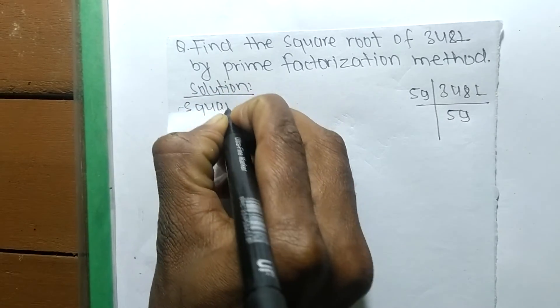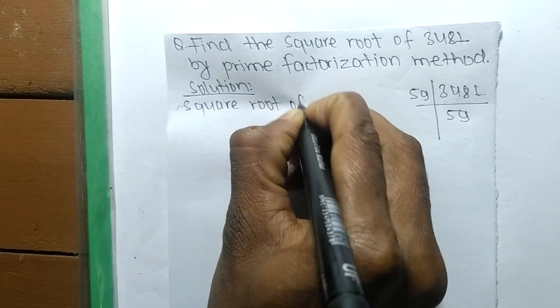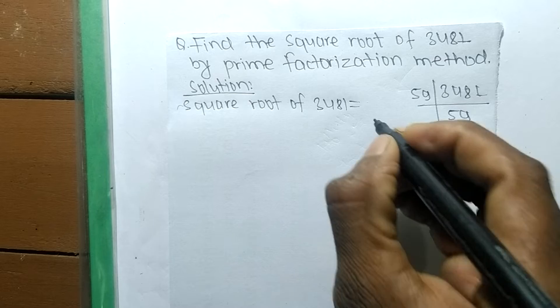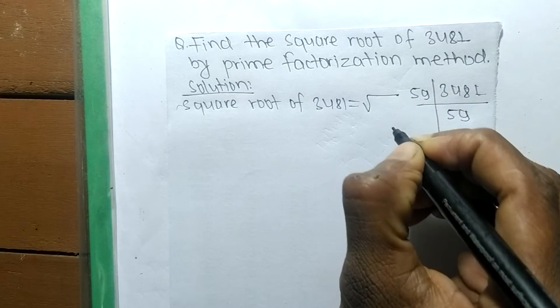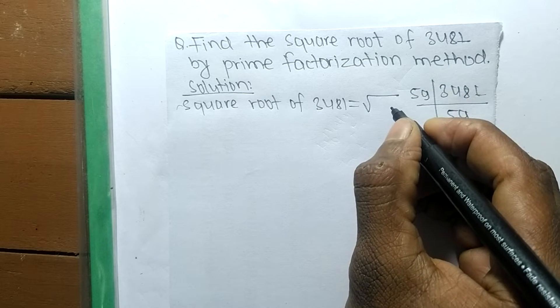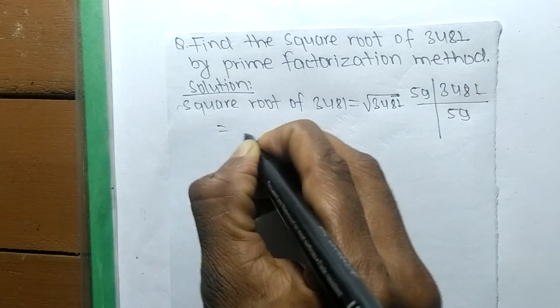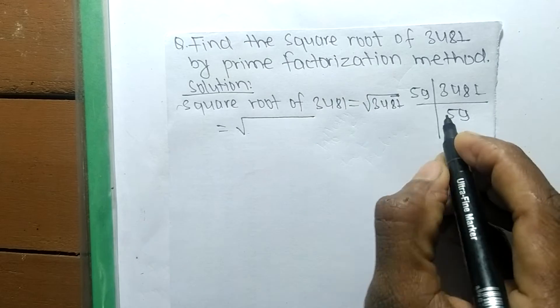So the square root of 3481 is equal to - this sign is the sign of a square root - and we are finding the square root of 3481. So it is equal to its prime factors, which are 59 times 59.